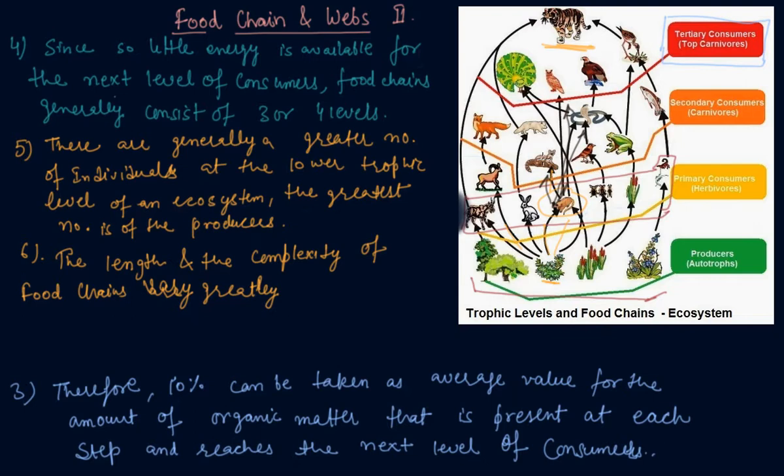So instead of a straight line food chain, the relationship where one organism is eaten by many other organisms is shown by food web. And this is called a food web.